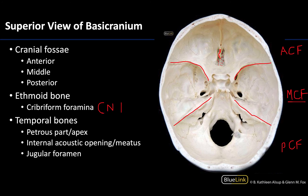Moving to the posterior cranial fossa, the area between the middle and posterior fossae is the petrous part. This whole complex is the petrous part of the temporal bone, which houses both the middle ear and the inner ear. The very top portion projecting most superiorly is the apex of the petrous part — the subdivision between the middle and posterior cranial fossae.